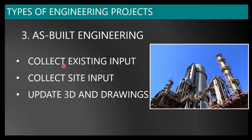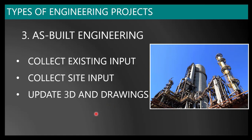For as-built engineering execution, the first step is to collect all existing inputs. Then you ensure whether the collected input matches the site condition by also collecting site inputs. If you have collected certain inputs and verified them against the site condition and both match, you proceed to update your 3D model and drawings. As-built engineering is done to have an updated 3D model and updated drawings that can be used for future design — this is the primary intent of as-built engineering.